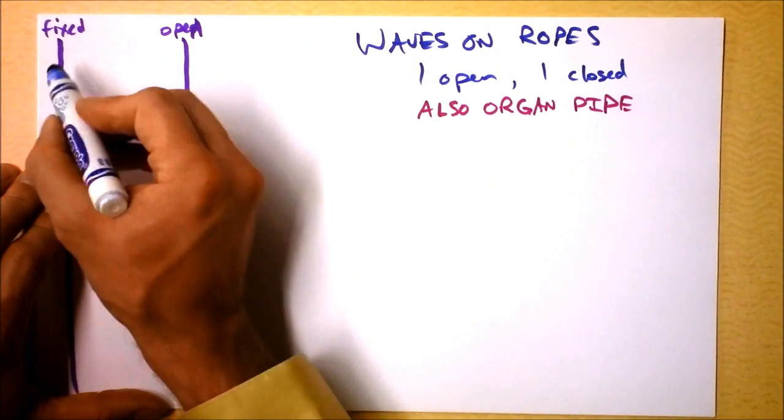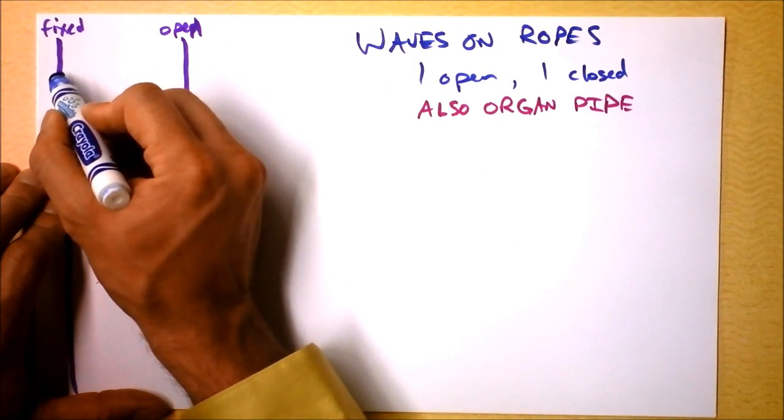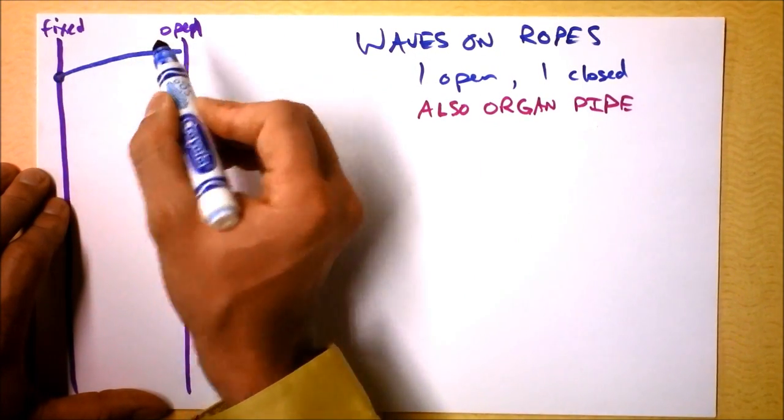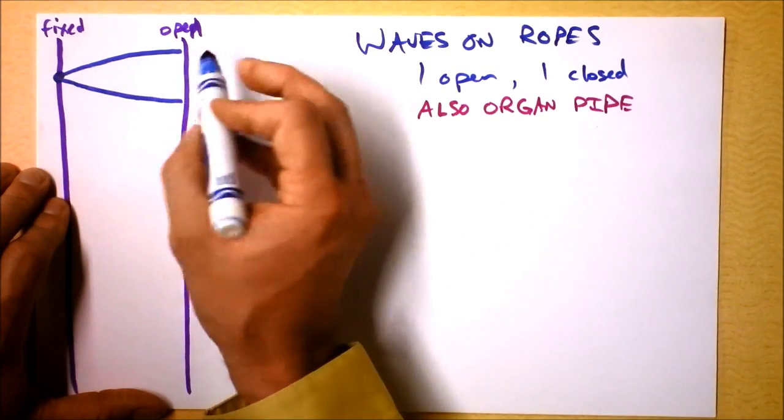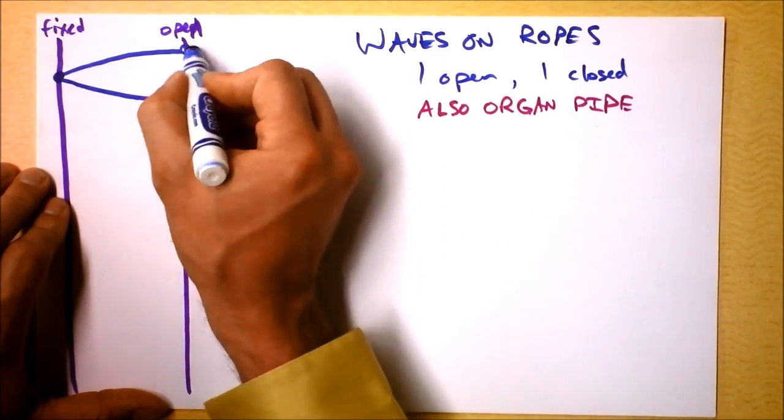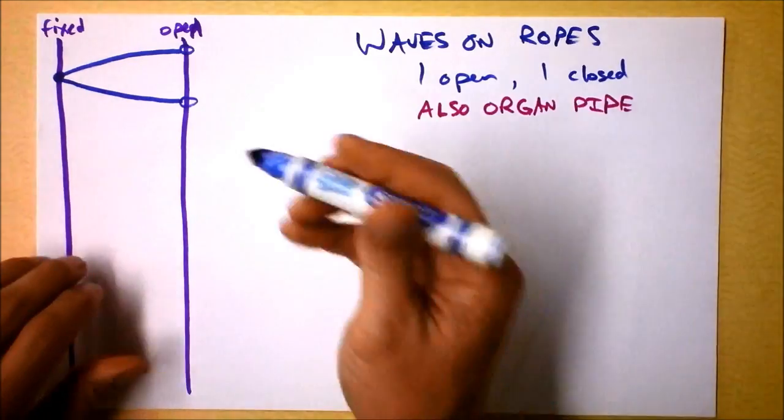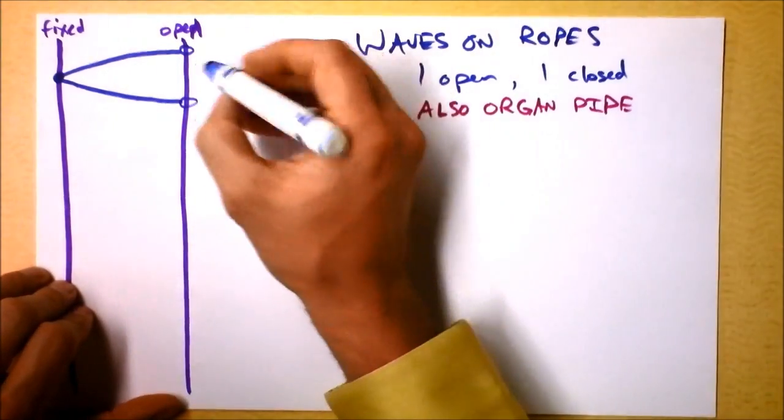So our first possible wave is incredibly simple. There is a node here and an antinode here, and that's what it looks like. We've got this thing right there where it can go up or down. This will be the first harmonic.